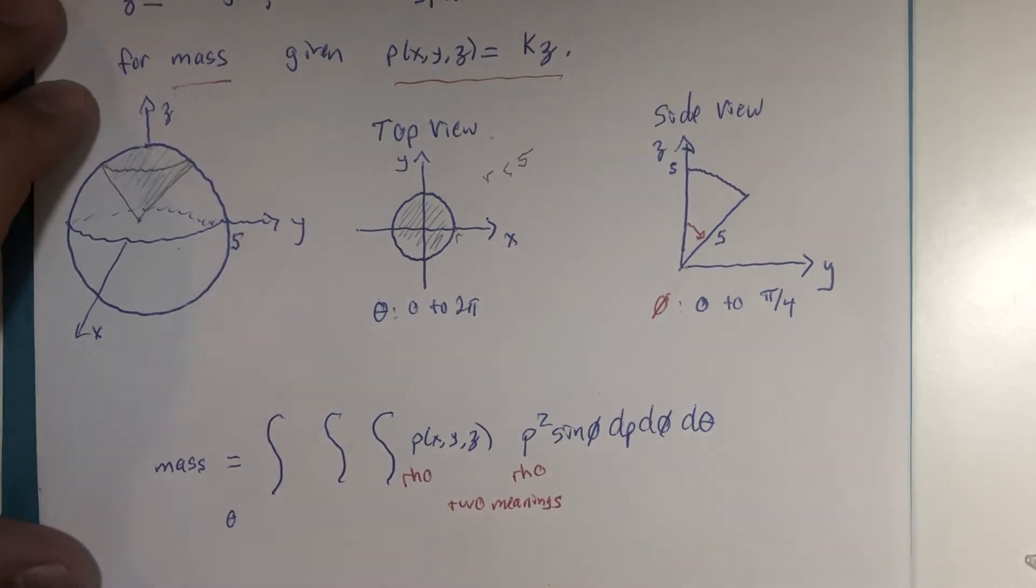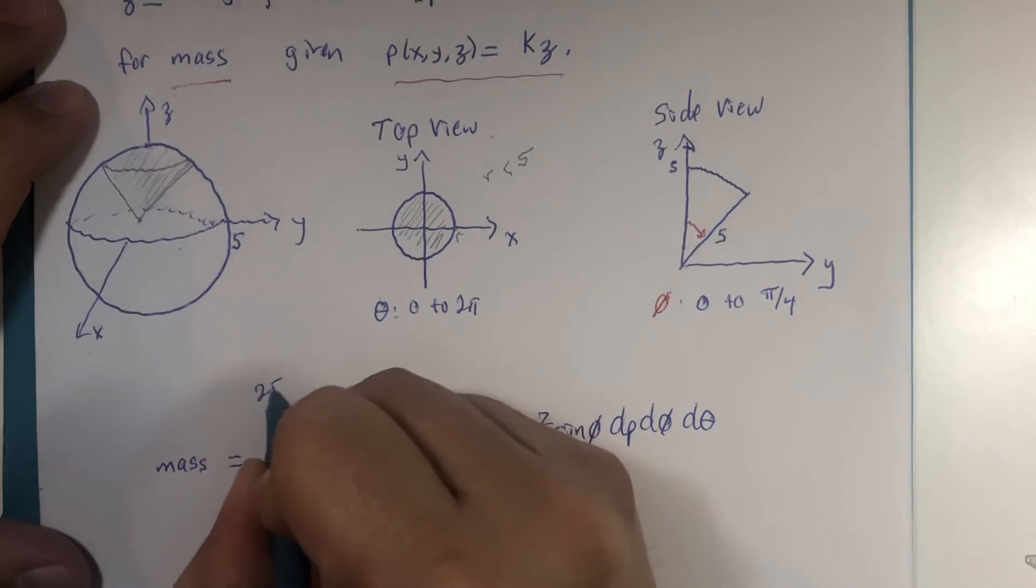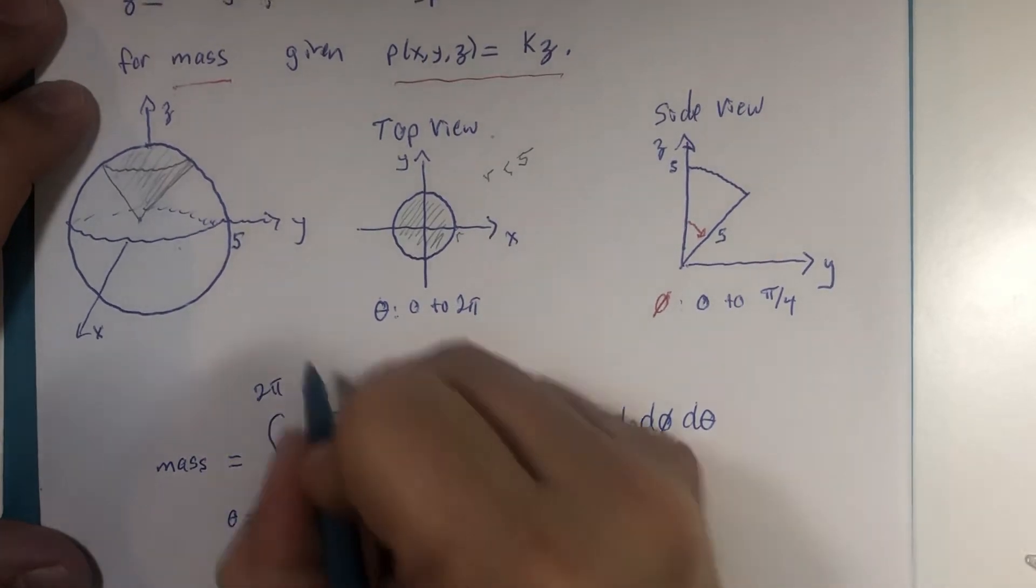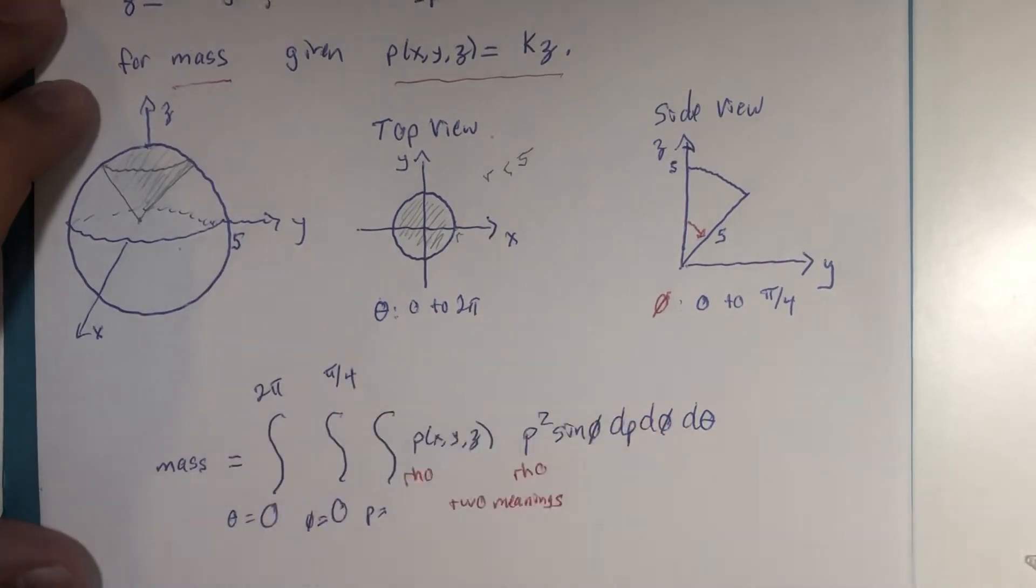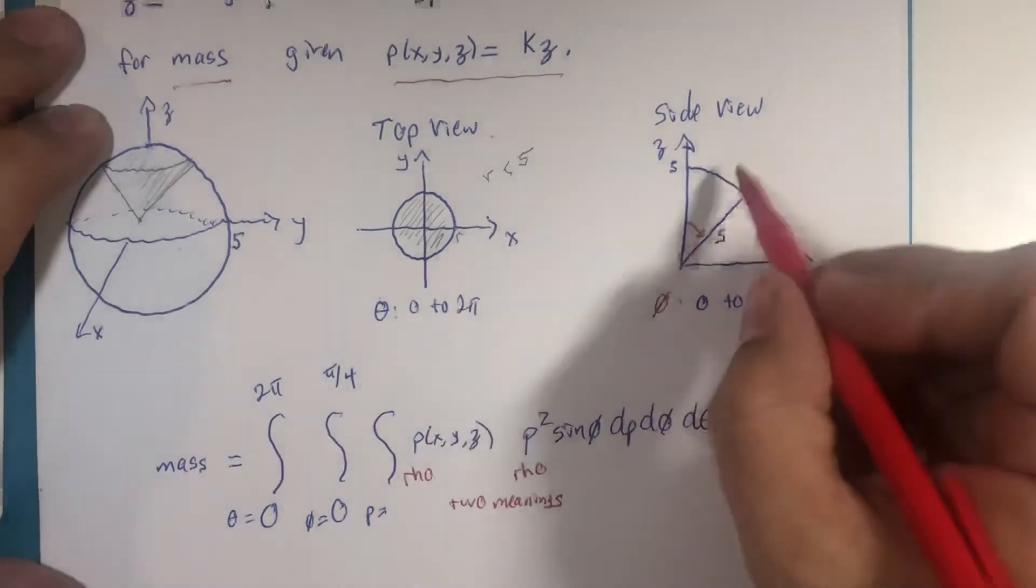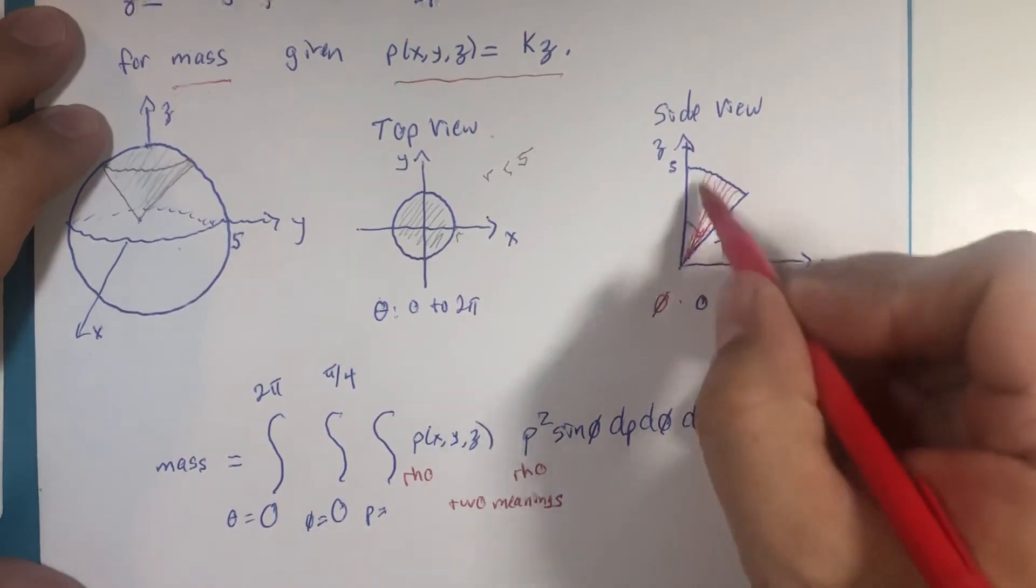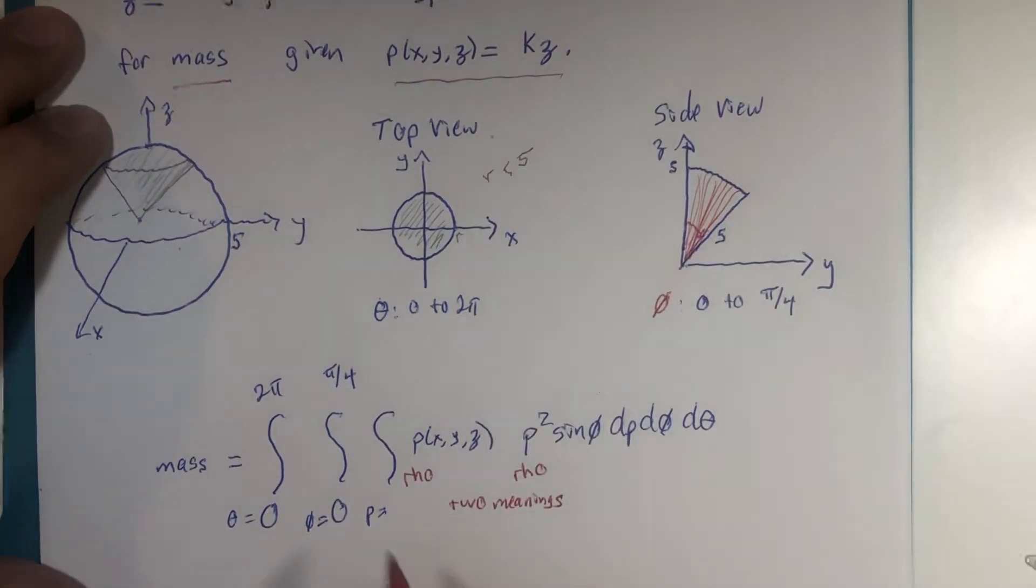But that's theta, that's phi, that's ρ. And I already know that theta is 0 to 2π, and that phi is 0 to π divided by 4.